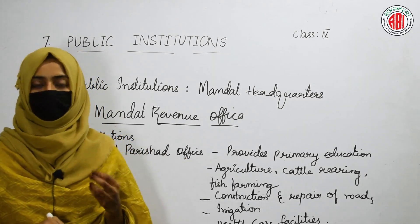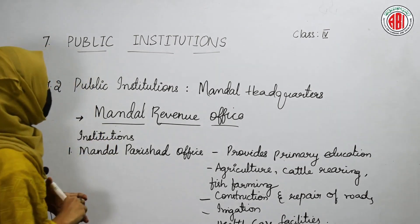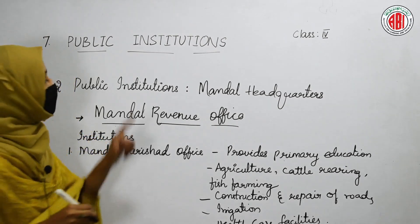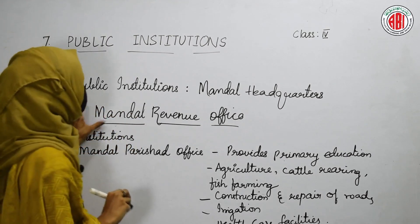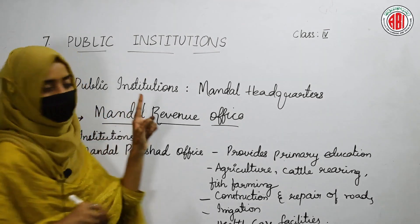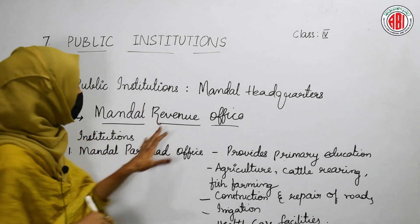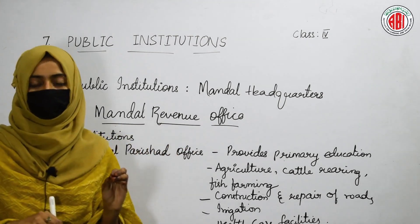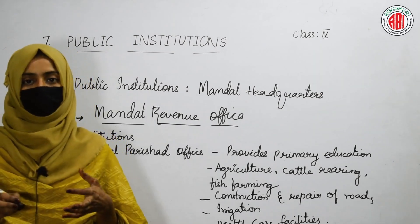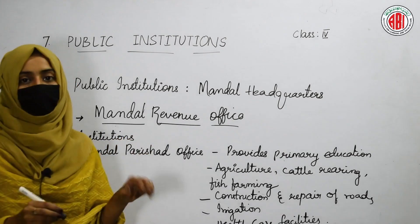Now let us talk about the mandal headquarters. In the village, the Gram Panchayat looks after the problems of people living there. A group of villages forms one mandal. In the mandal headquarters, there is an office called the Mandal Revenue Office. Just like the tehsildar office in a village, the Mandal Revenue Office looks after different matters and works for the welfare of people. Its functions include distribution of ration cards and collection of land tax.